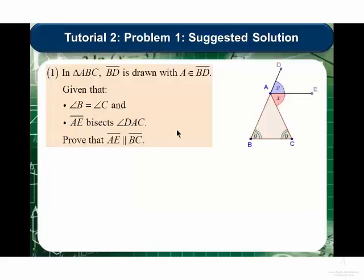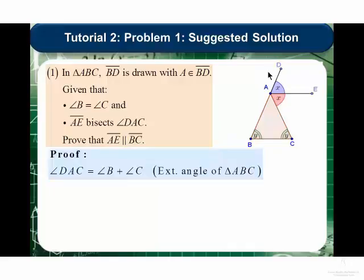Let us have a look at the suggested solution for problem 1 of tutorial 2. Here we have the problem again. In this case, we have to prove that line segment AE is parallel to side length or line segment BC. In this case, we know that the exterior angle DAC is equal to the sum of the opposite interior angles, the angle B plus the angle C.